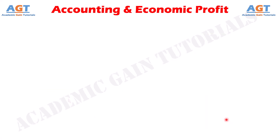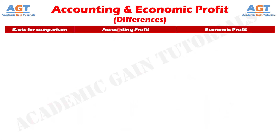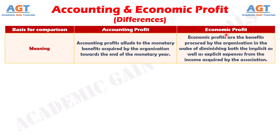Let's look into the basic differences between accounting profit and economic profit in a tabular form. Difference number one: accounting profits allude to the monetary benefits acquired by the organization towards the end of the monetary year. On the other hand, economic profits are the benefits procured by the organization after diminishing both implicit as well as explicit expenses from the income acquired by the association.